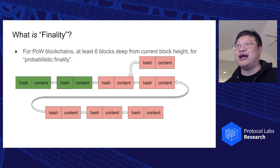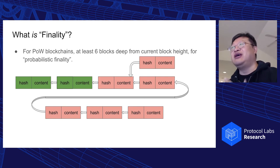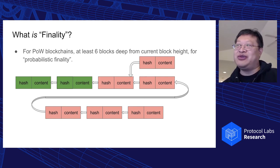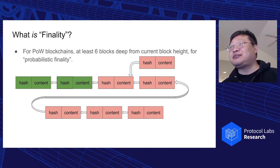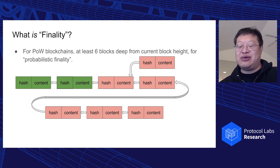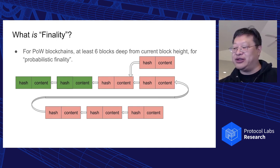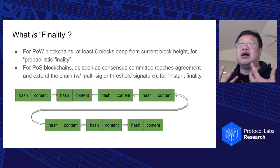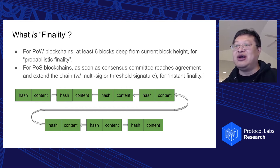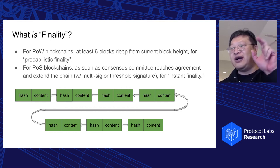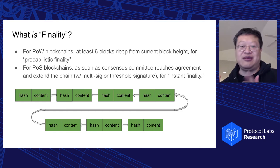So what is finality? For proof of work blockchains, it's probabilistic — we have two colors here, but really it should kind of fade in and out. It's probabilistic because you don't know if you're on a short chain until you've had more blocks included. For proof of stake blockchains, as soon as the consensus committee have reached agreement and extended the chain using special signatures, people talk about instant finality. If it's on the chain, everybody can verify signatures and we can rely on the results.